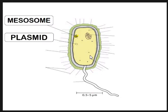Then we've got the plasmid - that little structure there is a circular ring of DNA. This contains other genes than those found in the main genetic material. The genes for antibiotic resistance will be found in the plasmid. Plasmids are also of great use for genetic engineering because we can use the plasmid to transfer genes between one cell and another.